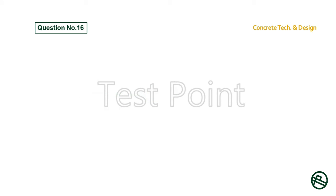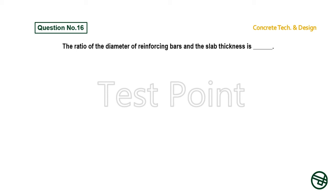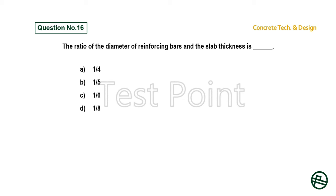Question number 16: The ratio of the diameter of reinforcing bars to the slab thickness is — Option A: 1/4. Option B: 1/5. Option C: 1/6. Option D: 1/8. Answer is Option D: 1/8.